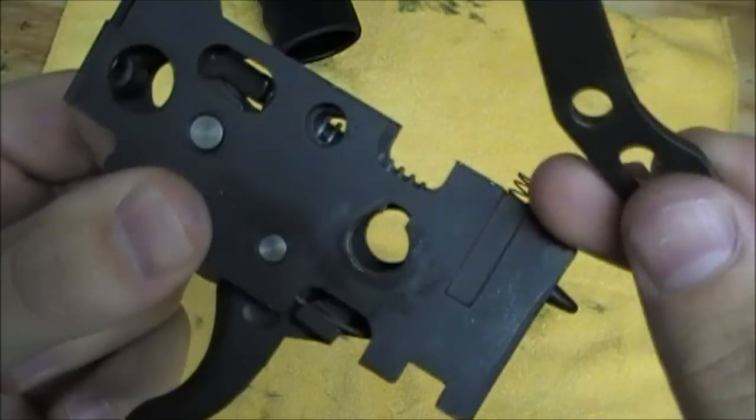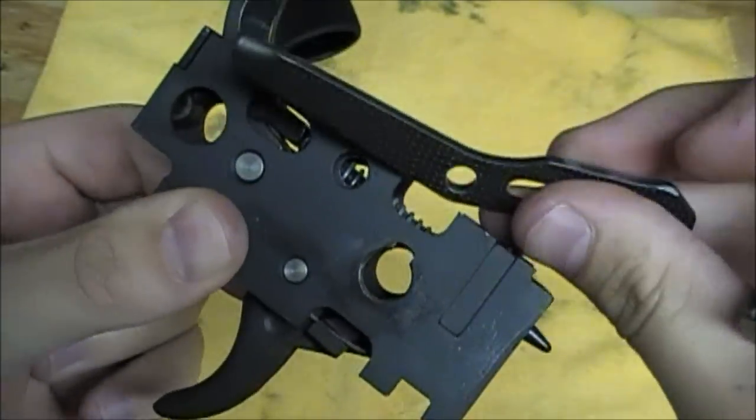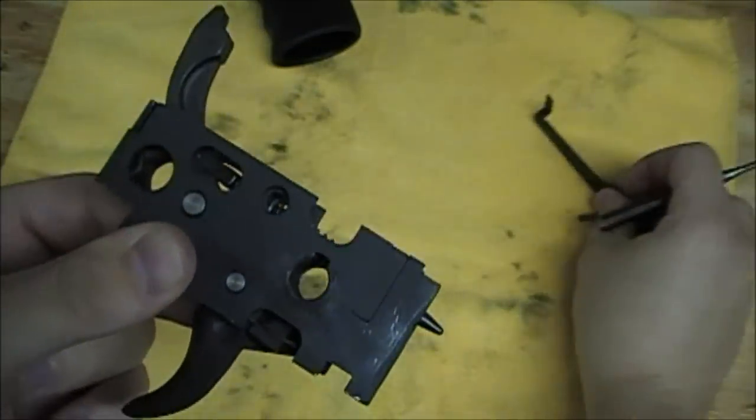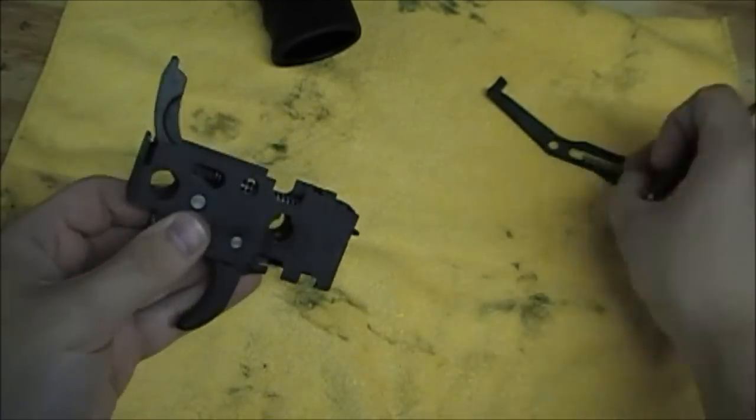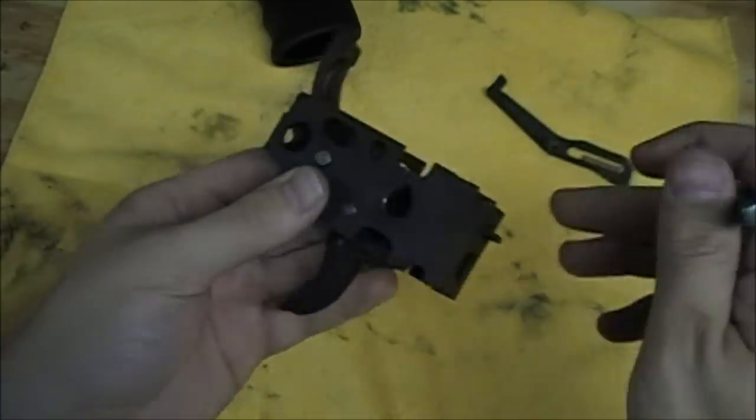Also don't forget your little ejector spring there, it gets easily lost. Take the ejector spring, ejector, and the axis pin, set them aside, and that's done.